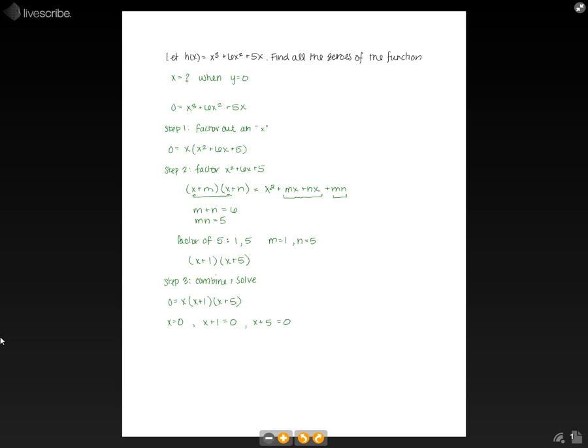So x equals 0 is done. So our zeros here, one of them is just going to be 0. So if we solve x plus 1 equals 0, we need to subtract 1 from both sides, and we'll get x equals negative 1. So one of our zeros is negative 1. And now if we solve this last one, x plus 5, we subtract 5 from both sides, and we get x equals negative 5. So when y equals 0, x could equal 0, negative 1, or negative 5. And those are the zeros of this function.